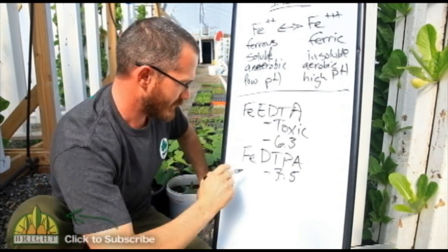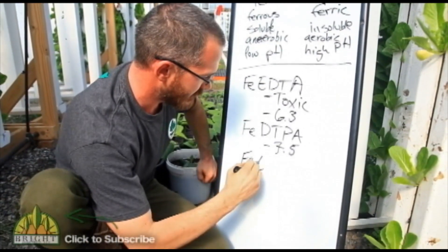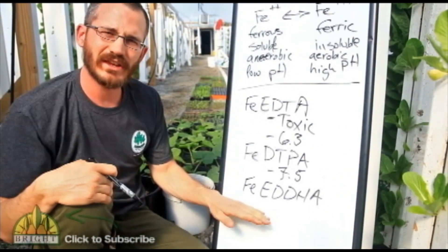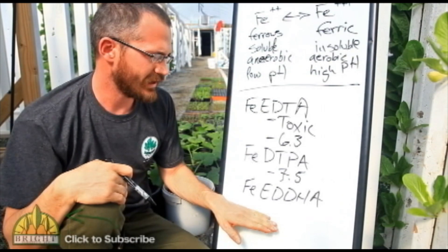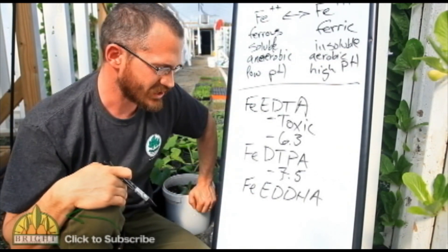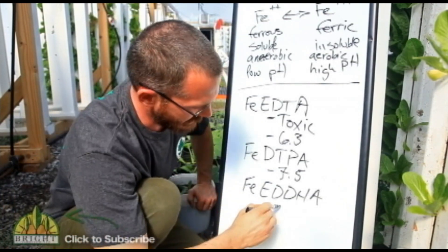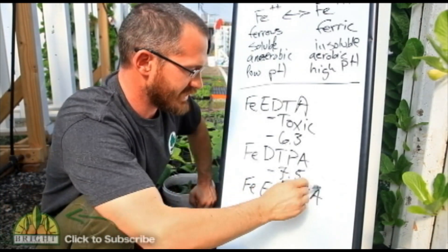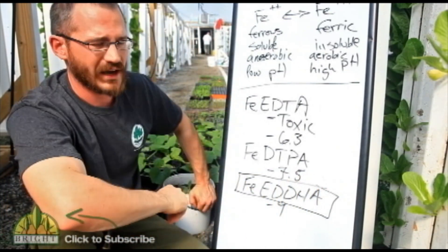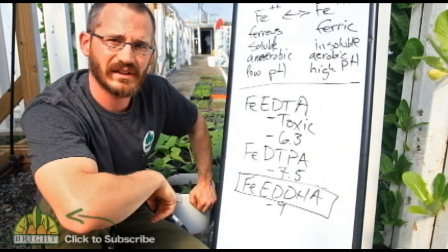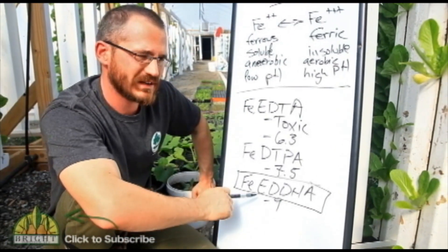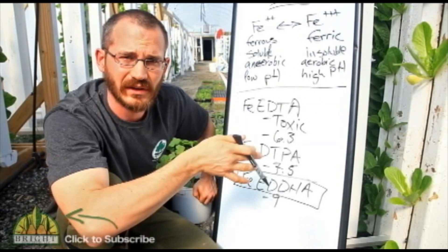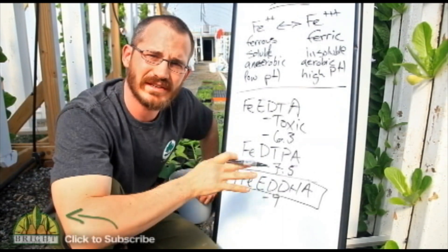The best option, though — and this is a little bit harder to find — is Fe-EDDHA. This is a really, really good iron chelation. It works up to about a pH of 9. Almost all beginning systems that are showing some iron deficiency should be using this chelated iron. It's effective up to pH 9, effective down into the high fives — to the point where you don't need it anymore, basically. It's just an all-around great chelated iron.